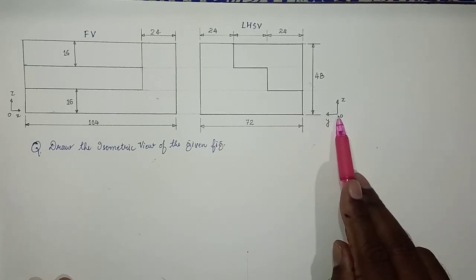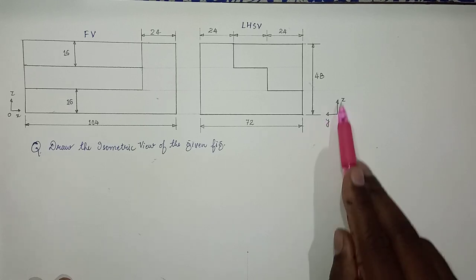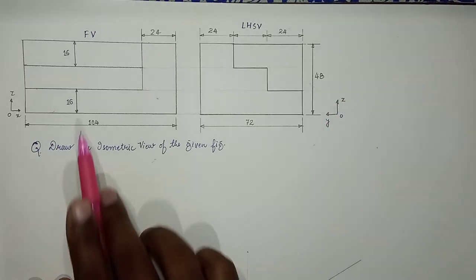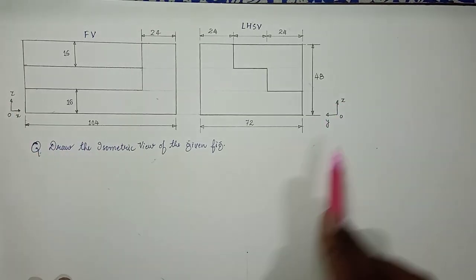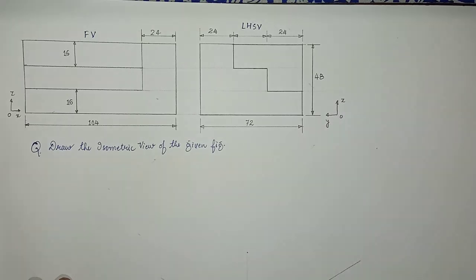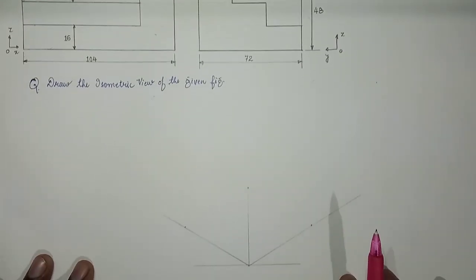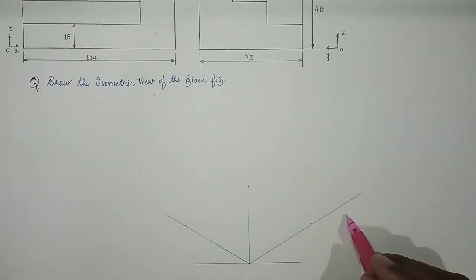This is along y-axis and this is along z-axis. So the front view, you'll get the x-z plane. Side view, you'll get the y-z plane. So this is x-z plane, this is y-z plane.